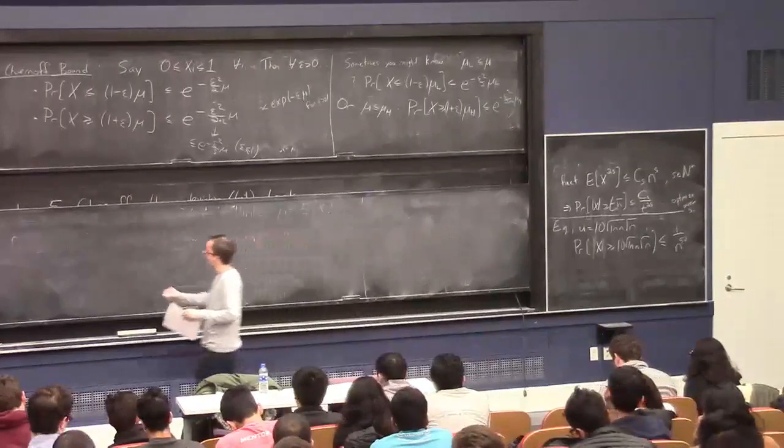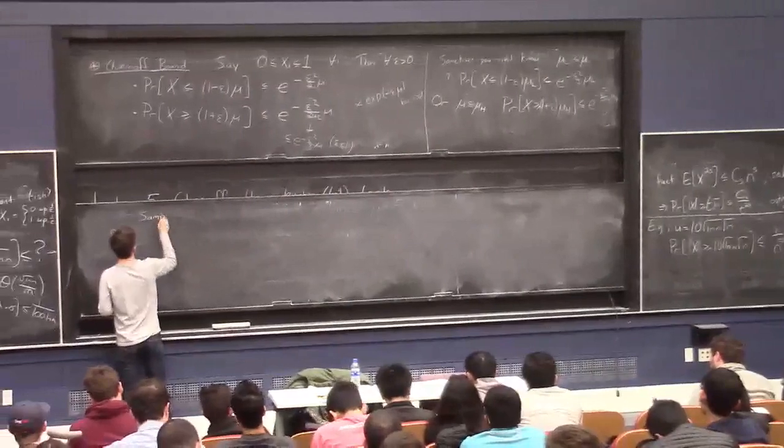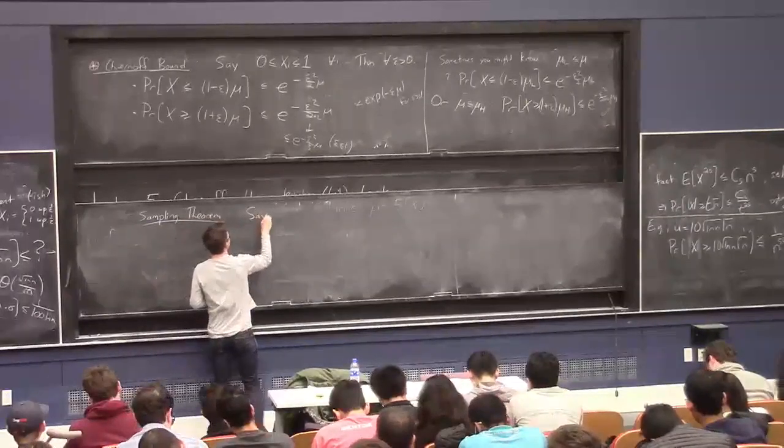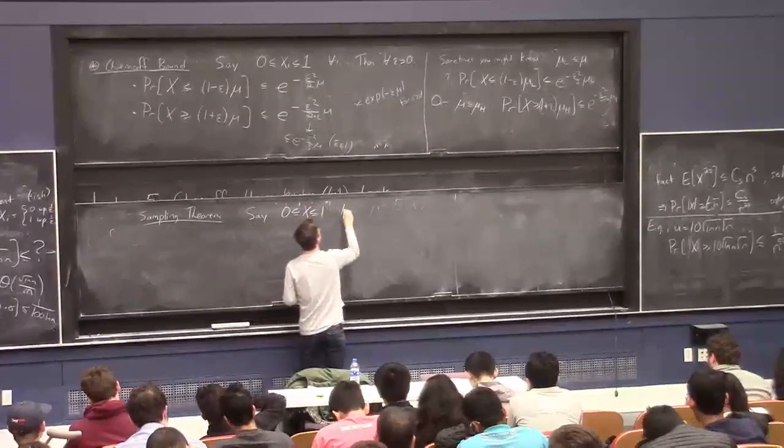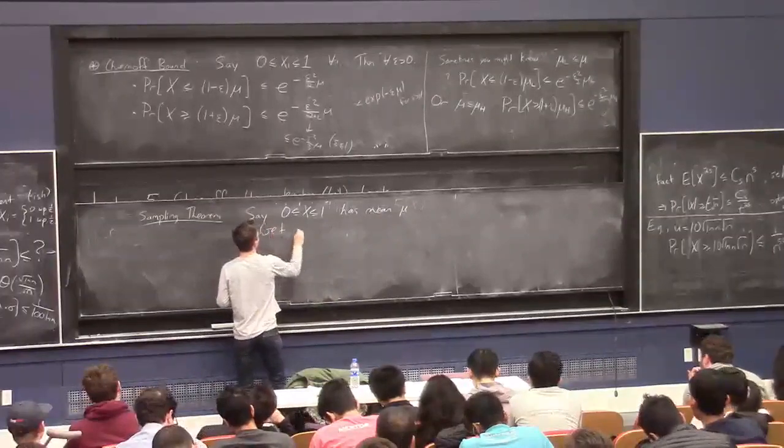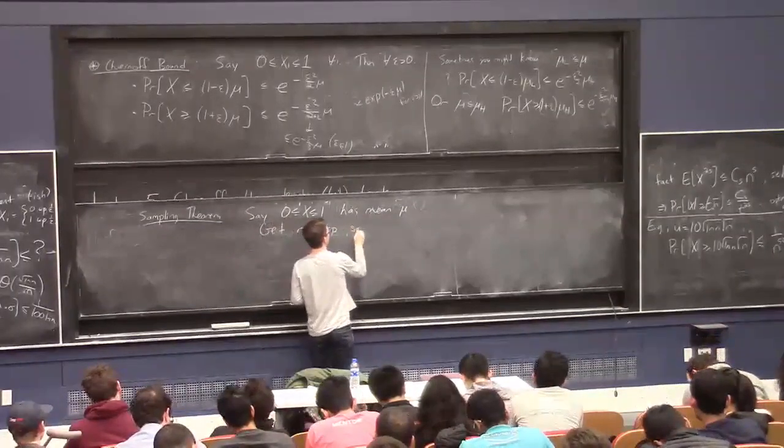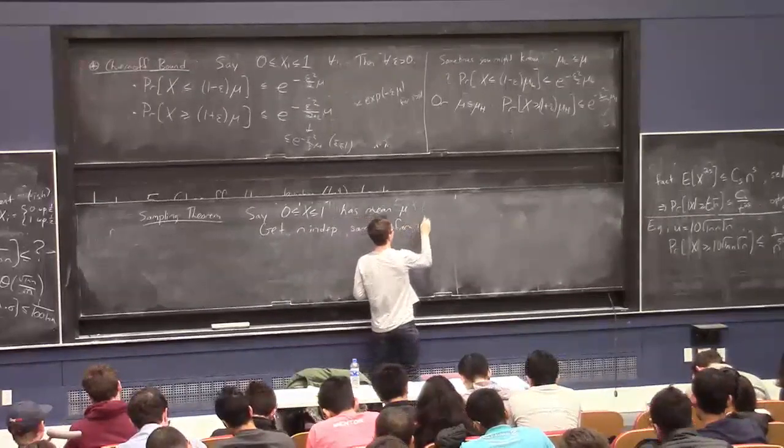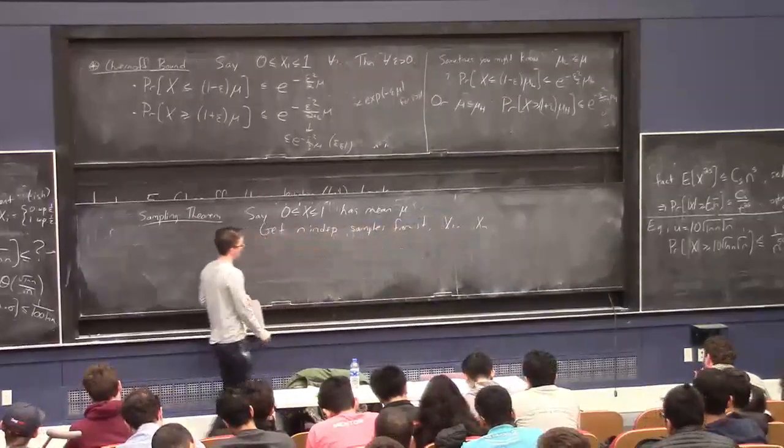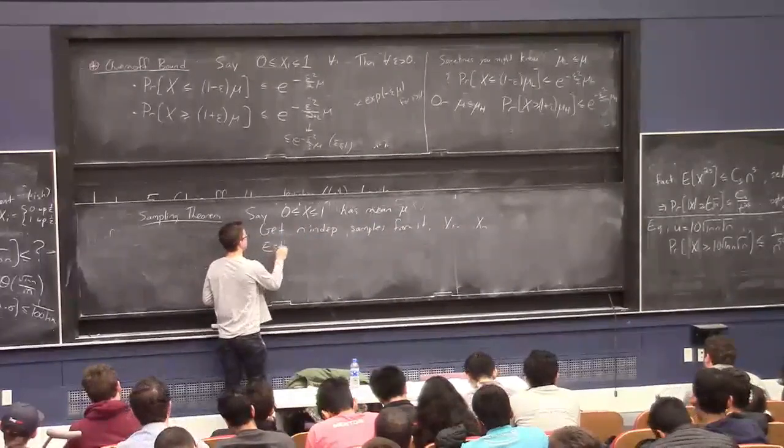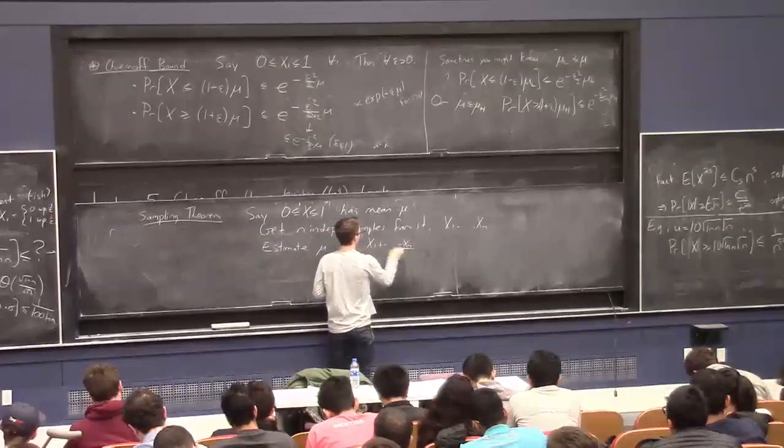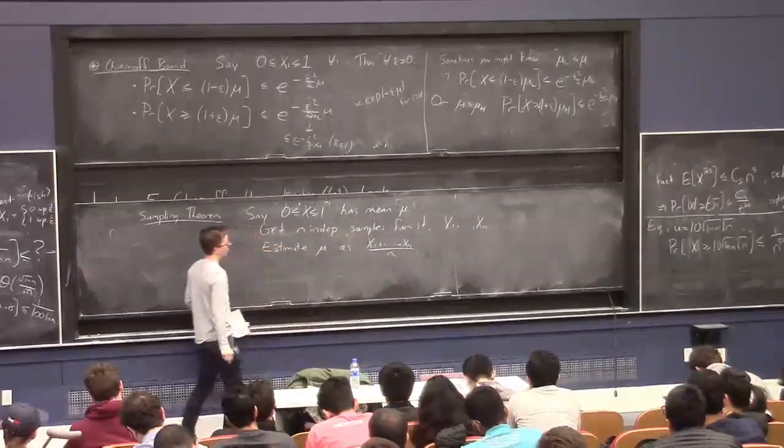Well, the last theorem I'll write on the board and then it'll be done. This is sometimes called the sampling theorem. It's a direct corollary of Chernoff bounds. And it says the following. Let's say you have a random variable, which is bounded between 0 and 1. It has mean mu. And let's say you get n independent samples from it. Where you get to see X1 through Xn that all have the same distribution as this unknown X. And they're independent. And you estimate the mean in the natural way, mu hat, as the empirical average over n. This should be close to the true mean you would hope.